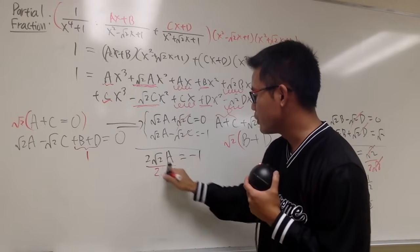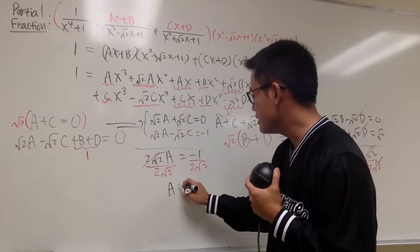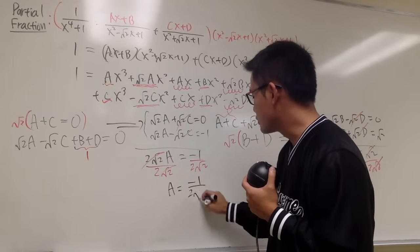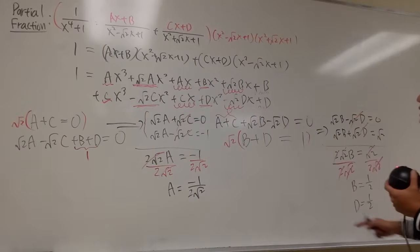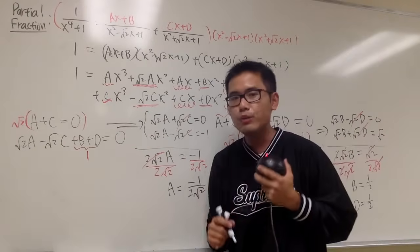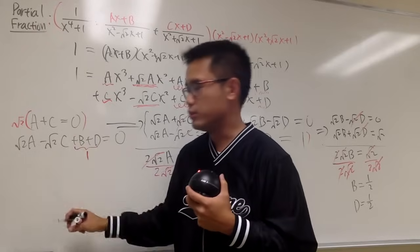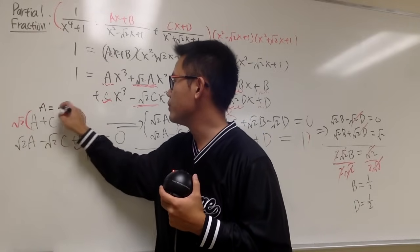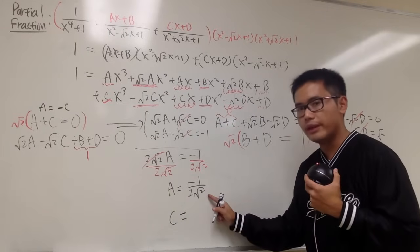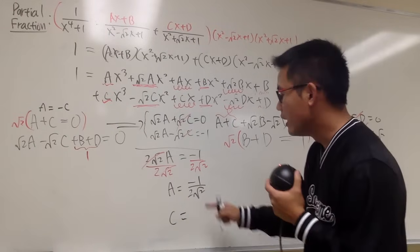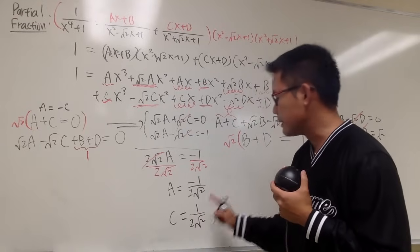Dividing both sides by 2 square root of 2, a equals negative 1 over 2 square root of 2. Since a plus c equals 0, that means a equals negative c, so c has to be positive 1 over 2 square root of 2.